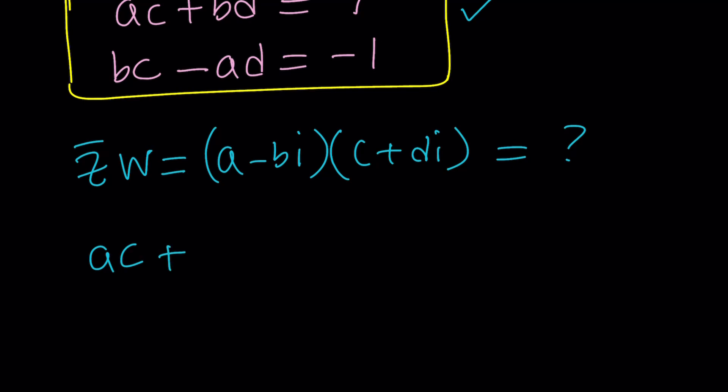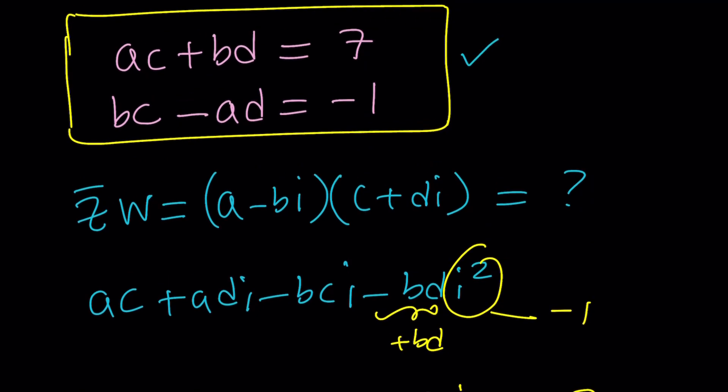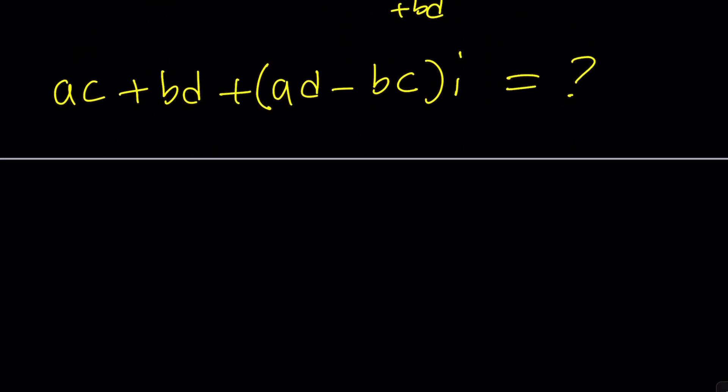ac plus adi minus bci minus bdi squared. Again, i squared is negative 1, so this turns into positive bd. This gives us ac plus bd plus ad minus bc, multiplied by i. Take a look at this. We do know what ac plus bd is, which is the real part. When we switch those bars around, the real part did not change because the imaginary part is the only part that's changed when you conjugate. So we can directly substitute: ac plus bd equals 7, so we'll replace it with 7.